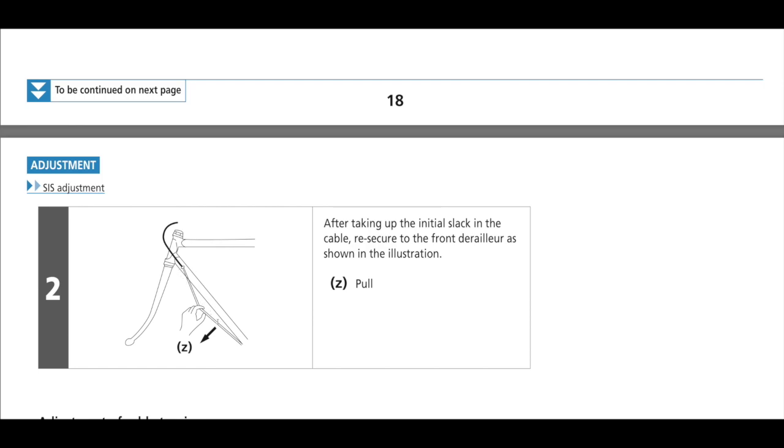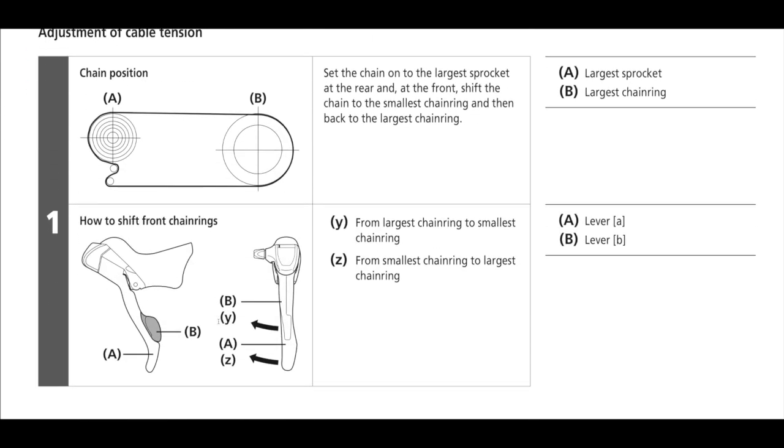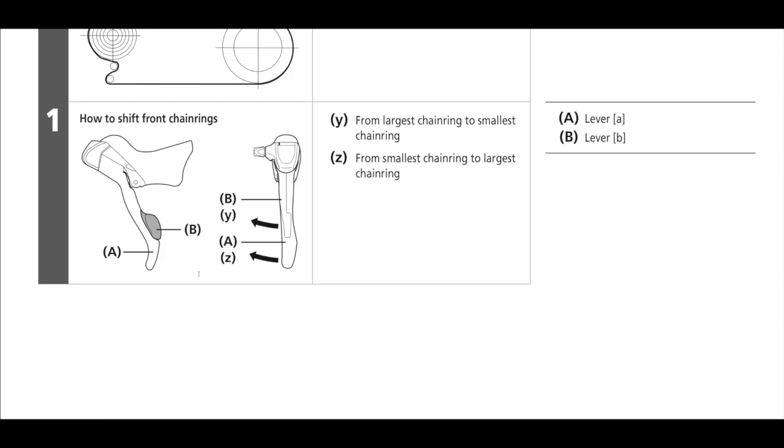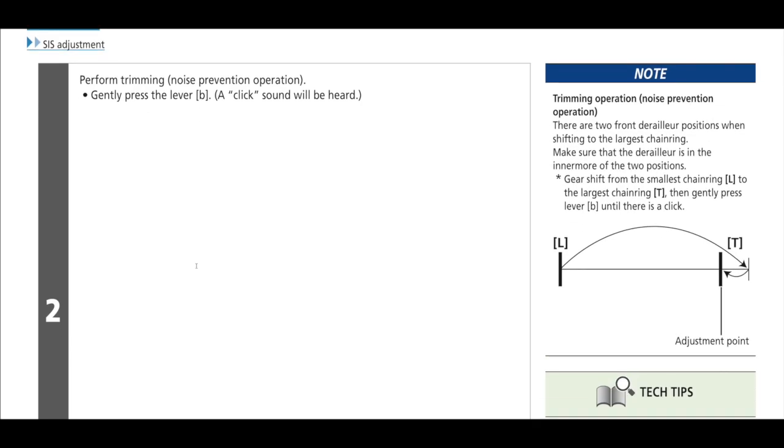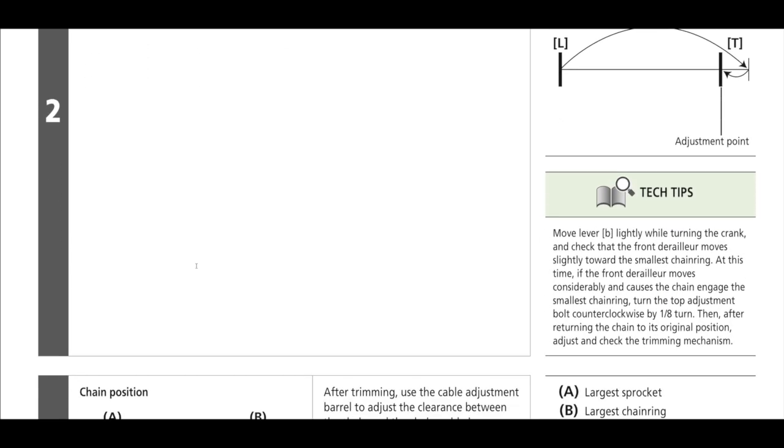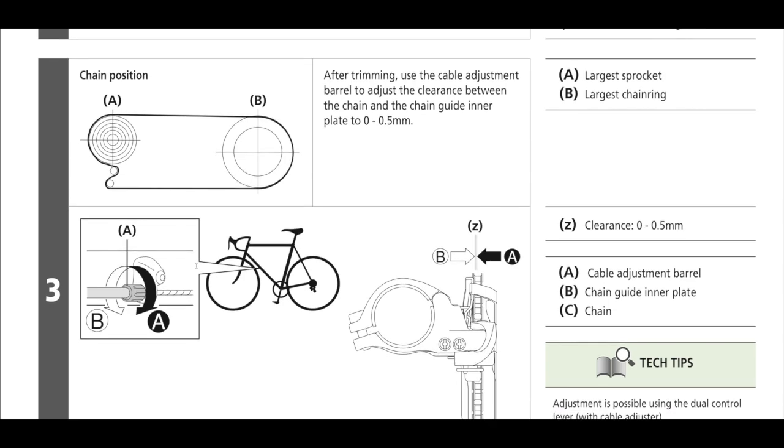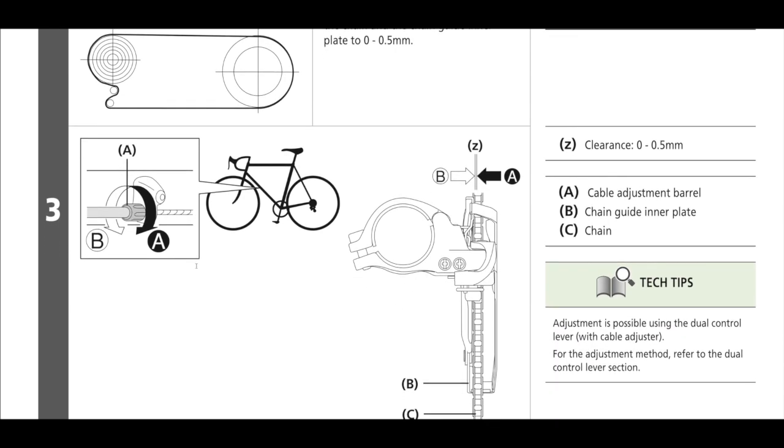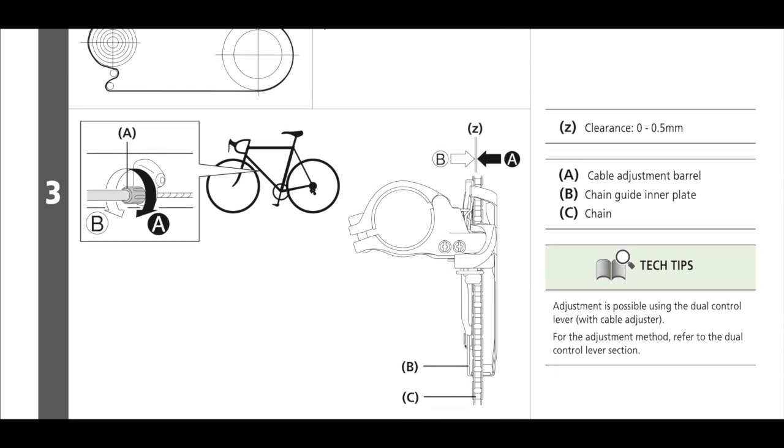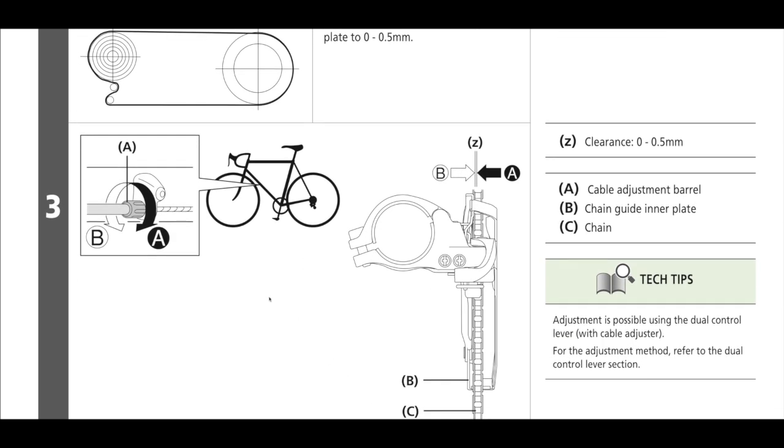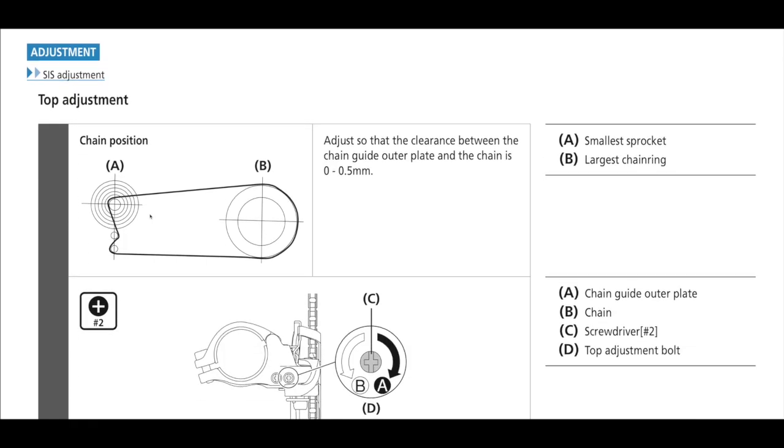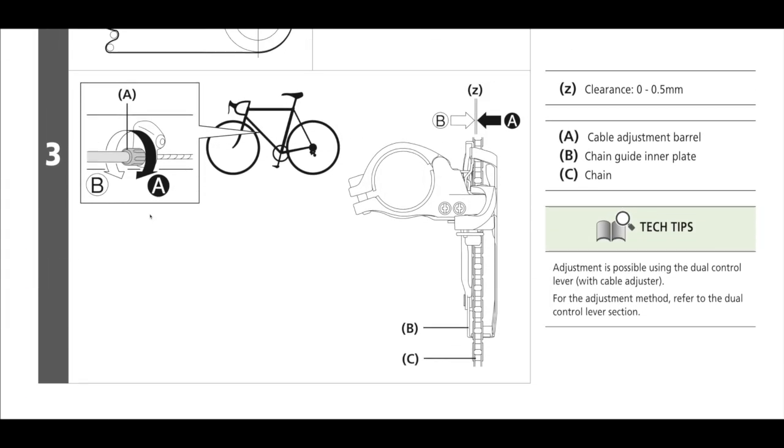Once you get it set up, make sure you stress the cable. Your high and low limit screws are essentially the same as any other derailleur. When you have it in the big ring, front small cog, you want just a little bit of clearance there. This one shows zero to 5.5 millimeters. I don't think you'd want zero because then it would be rubbing. Same with the small cog big ring - you want a little gap on the inside plate.